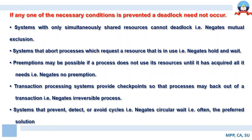The fifth condition involves systems that prevent, detect, or avoid cycles — that is, negate circular wait — which is often the preferred solution. A system that negates circular wait is often preferred as a solution to prevent deadlock from happening. So these are the five necessary conditions which, if prevented, the system may not enter into a state of deadlock.